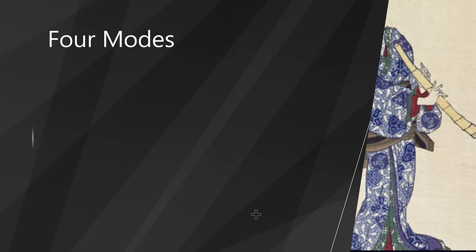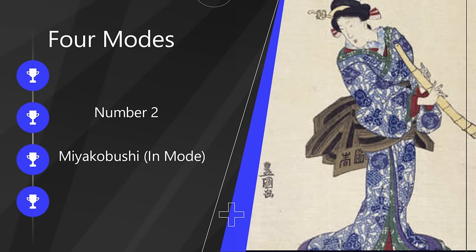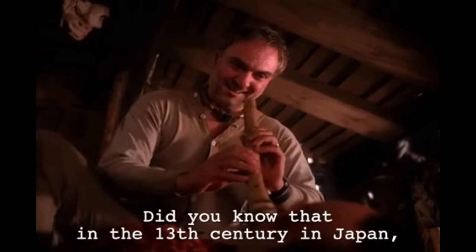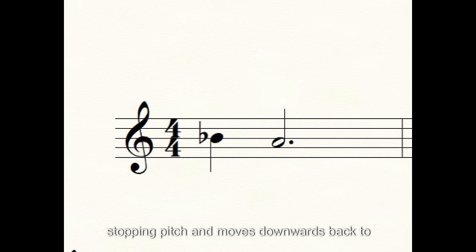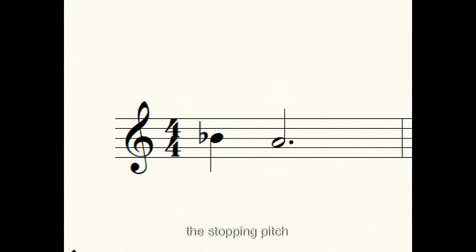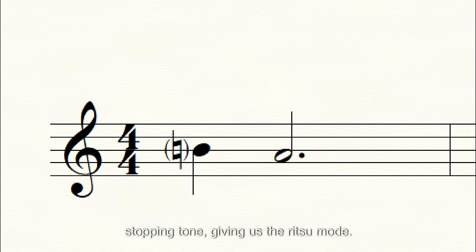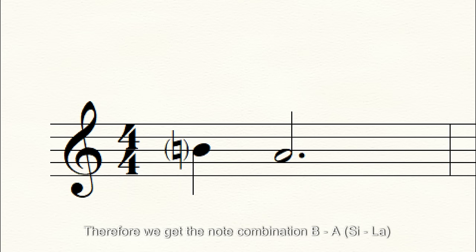The second mode is the IN mode, or the Miyakobushi mode. Shakuhachi players will be most familiar with this mode. This starts a minor second above our stopping pitch and moves downwards back to the stopping pitch. Thus, we get the notes B-flat and then A, or C, LA. The third mode is also a YO mode, but the major second starts above our stopping tone, giving us the Ritsu mode. Therefore, we get the note combination B, A.